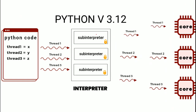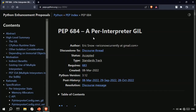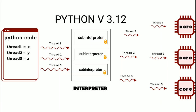Python version 3.12 came with a solution. The solution is the per-interpreter GIL. The Global Interpreter Lock was removed from the shared interpreter level and each sub-interpreter now has its own GIL. So when a sub-interpreter starts using shared data, it will not lock the other sub-interpreters from running simultaneously.